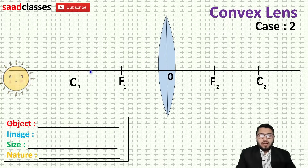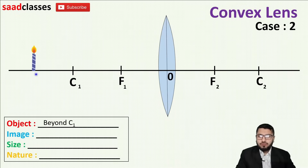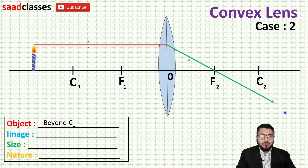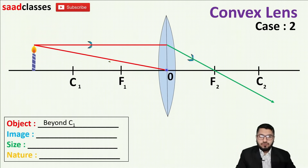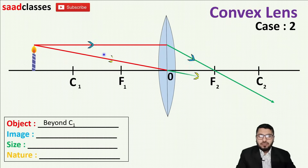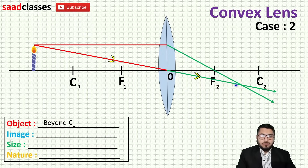In my next case — case number two — I will bring my object closer so it is beyond C1. I start with a parallel ray: it hits the lens and after refraction it passes through focus. I take another ray passing through the optical center, and we know that a ray passing through the optical center moves straight without any deflection. Both green rays are solid, so they are real rays. They cut at a point, and the image is formed between F2 and C2.